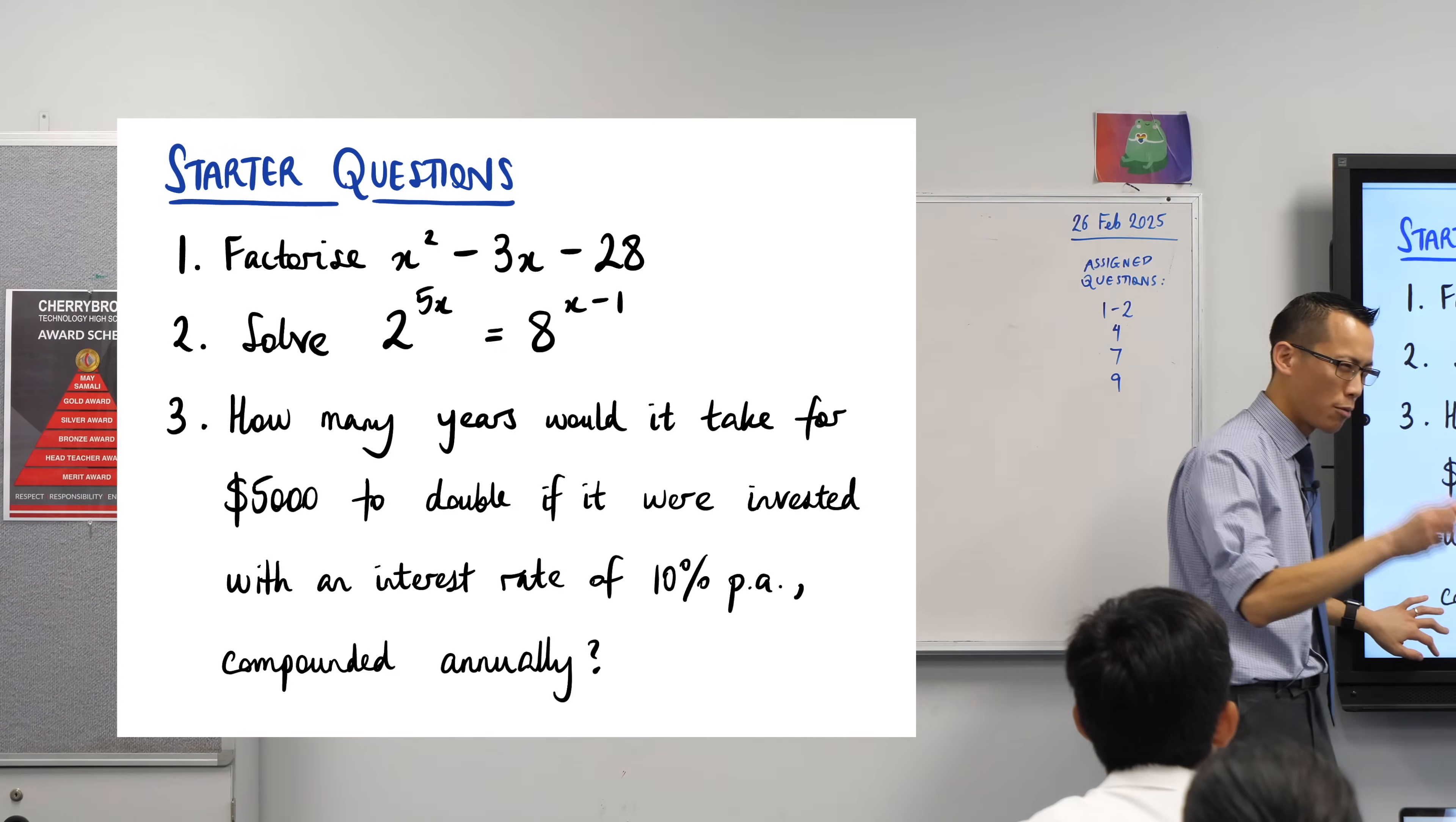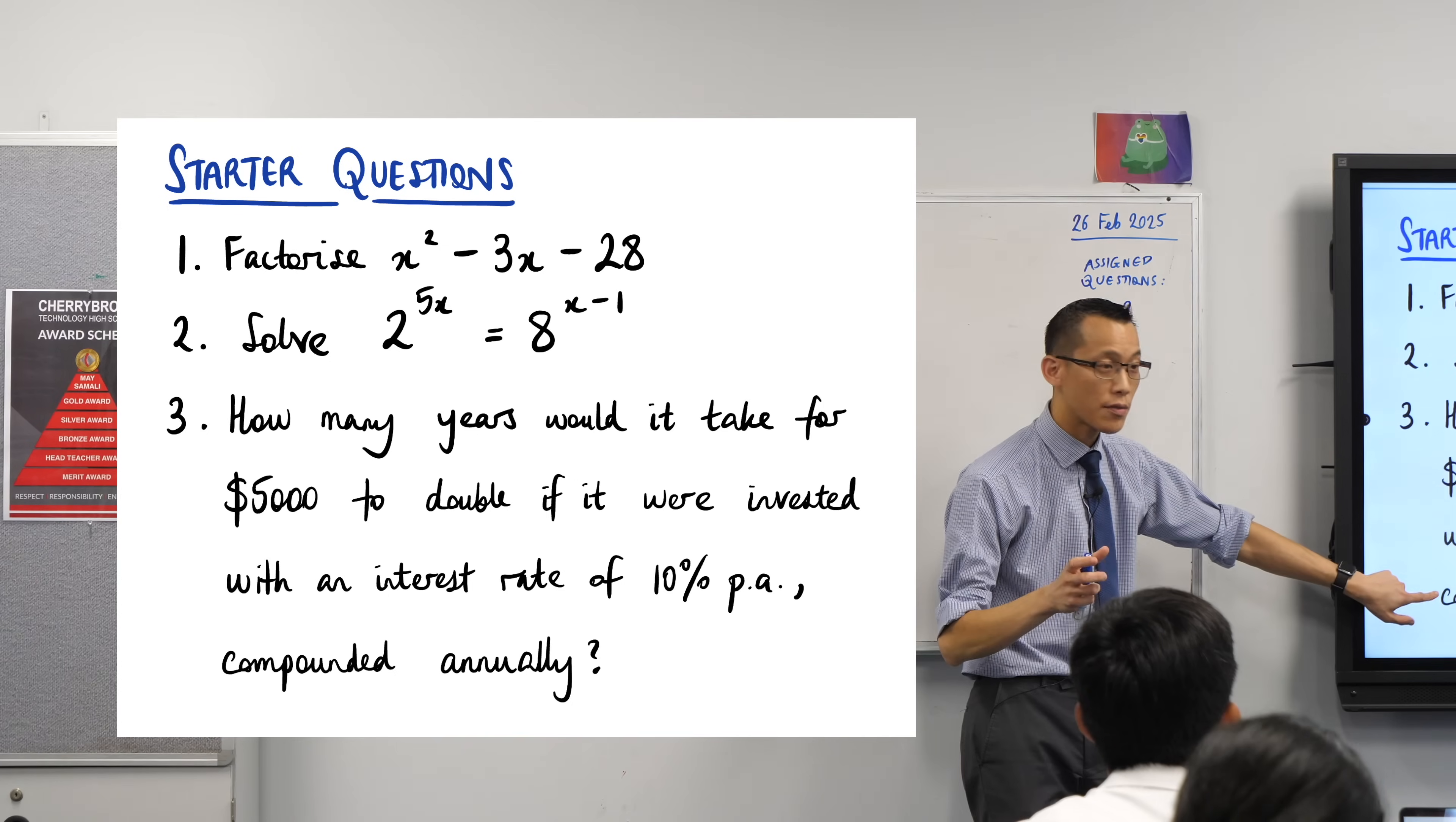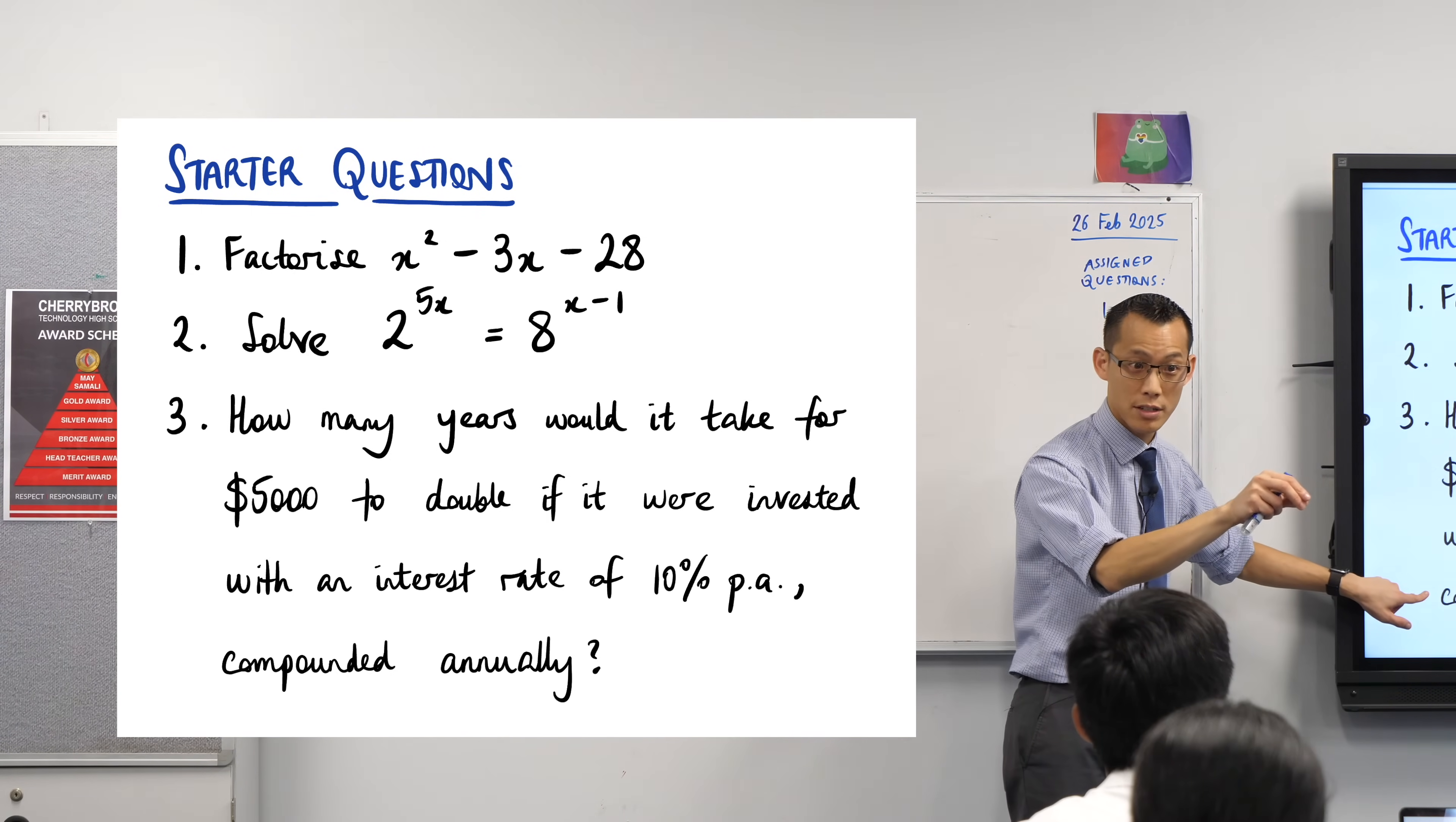And then there's this compounding period here. Now I think I'm going to put my flag in the ground to say a whole number is probably a more sensible answer here because of this part right here. It's compounded annually. So what answer did we get as a decimal? The people who gave me a decimal place, what was it? 7.27.